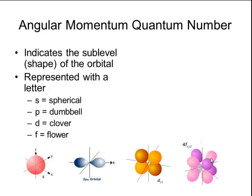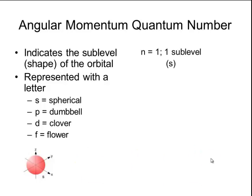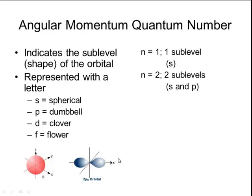Now there's a pattern between the principal quantum number and the angular momentum quantum number. If the principal quantum number is 1, then there is only one sublevel, or one shape, that can exist. And that is a sphere. If n equals 2, then there are two sublevels, or two shapes, that an orbital can have. It can either be an s, which is spherical, or it can be a p, which is dumbbell shaped.